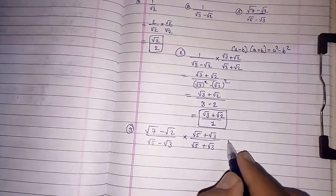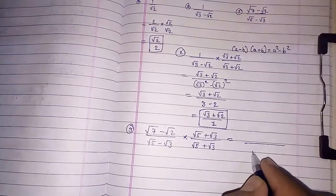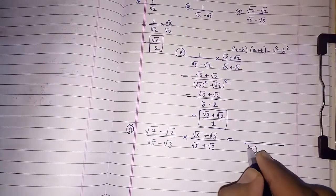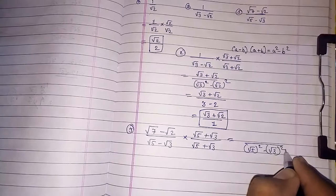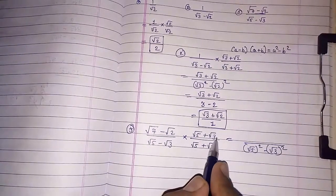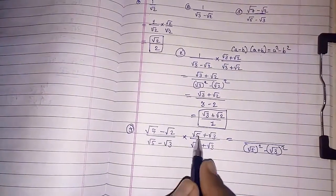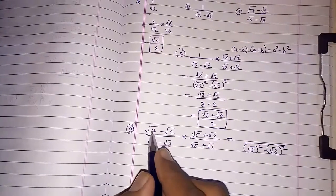And in numerator also root five plus root three. Now, what will happen? In denominator, we know, it will be root five whole square minus root three whole square. And in numerator first, root seven will be multiplied with these two. And then minus root two will be multiplied with this. I am going to multiply.